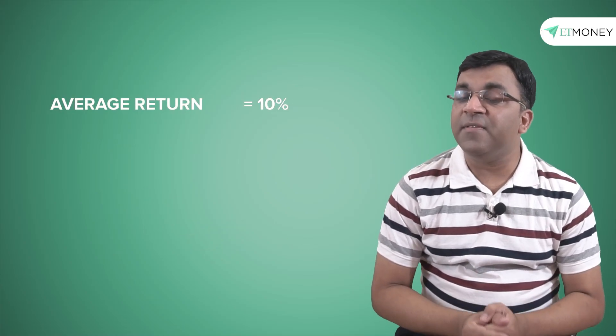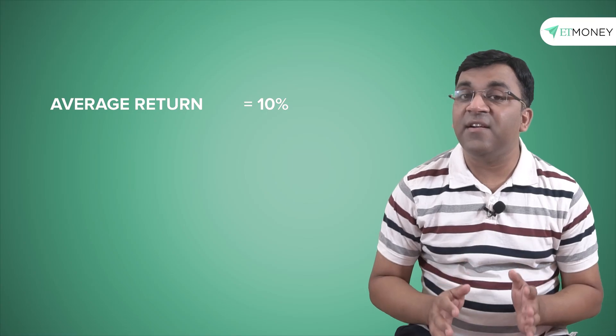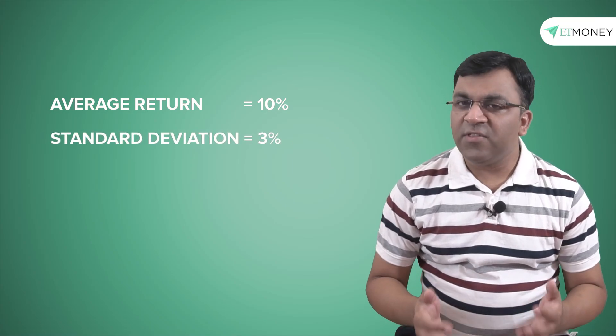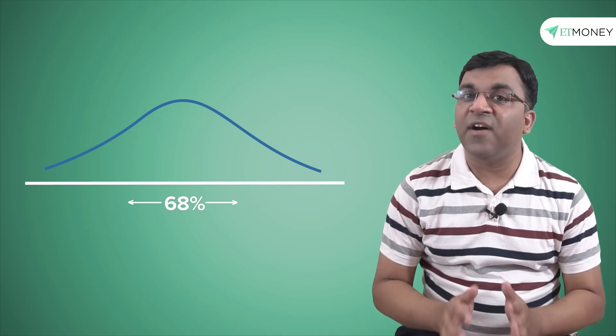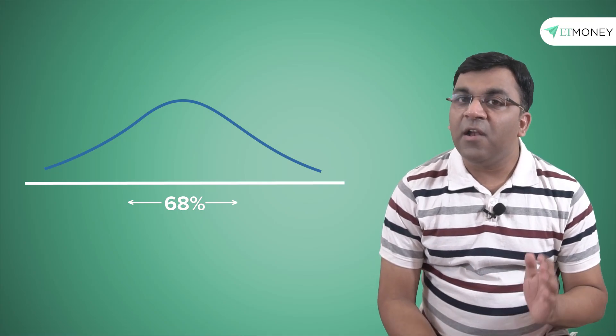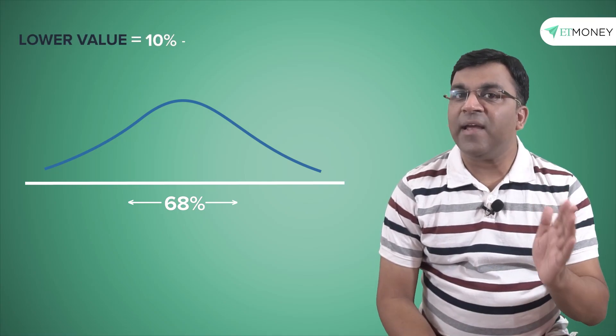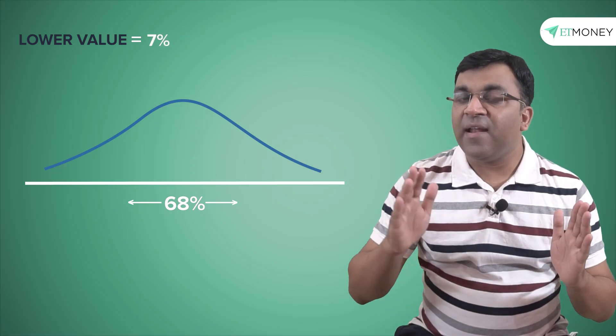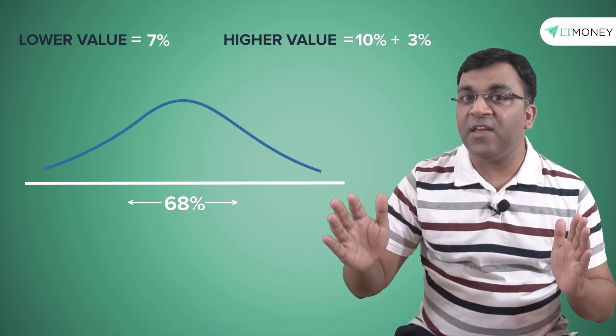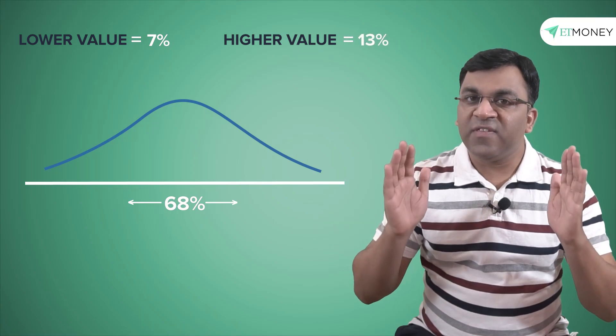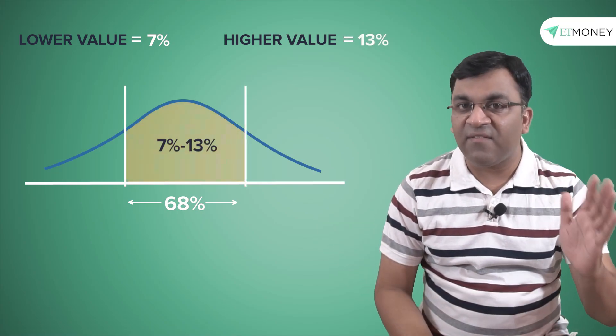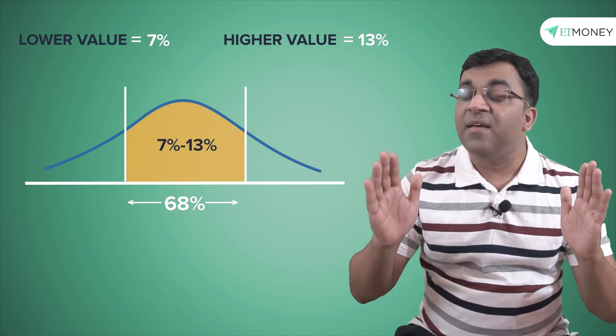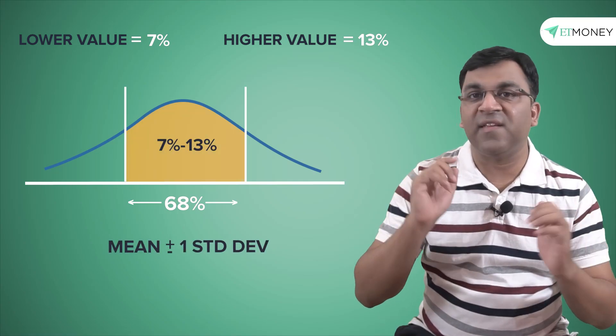To illustrate, let's say this fund that delivers a 10% average return has a standard deviation of 3%. What this means is that 68% of the times one can expect the fund's returns to be between a lower value of 10 minus 3%, which equals 7%, and a higher value of 10 plus 3, or 13%. So 68% of the times one can expect the fund returns between 7% and 13%, that is mean plus minus one standard deviation.